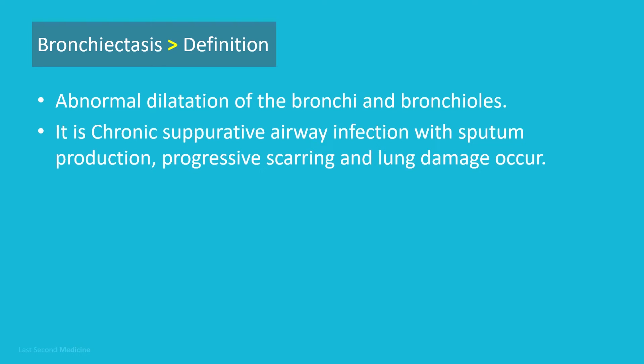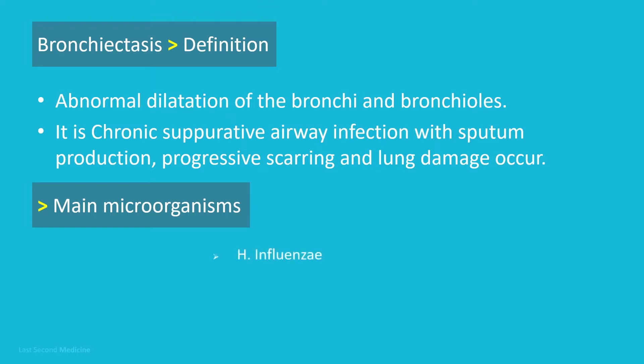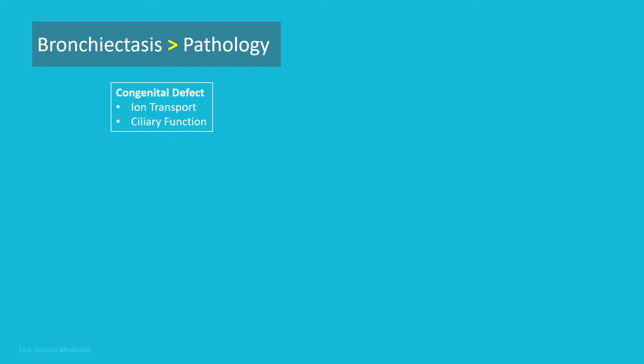Bronchiectasis means abnormal dilatation of the bronchi and bronchioles. It is a chronic suppurative airway infection with sputum production, progressive scarring, and lung damage. One of the important issues in bronchiectasis is recurrent infection, and the main organisms involved are the same as in COPD: Haemophilus influenzae, Streptococcus pneumoniae, Staphylococcus aureus, and Pseudomonas aeruginosa.